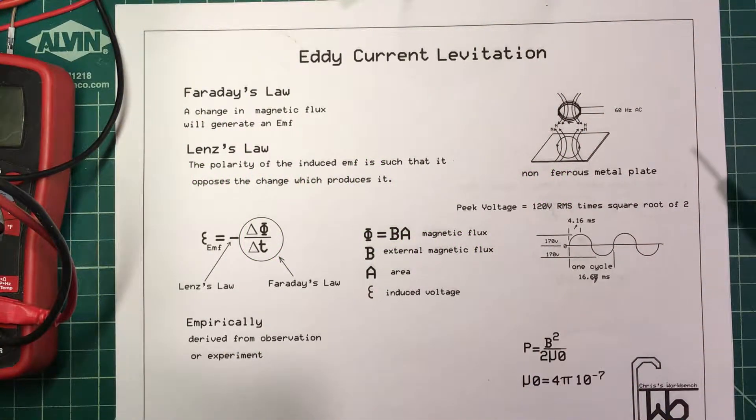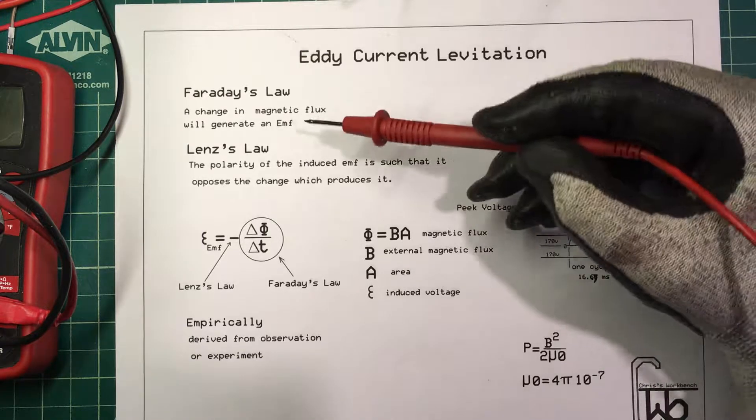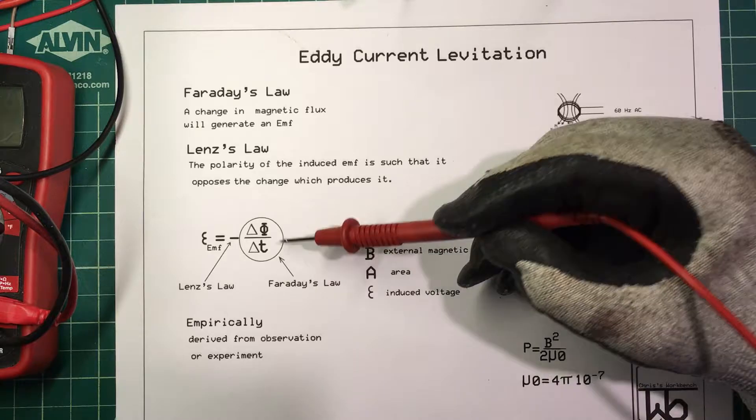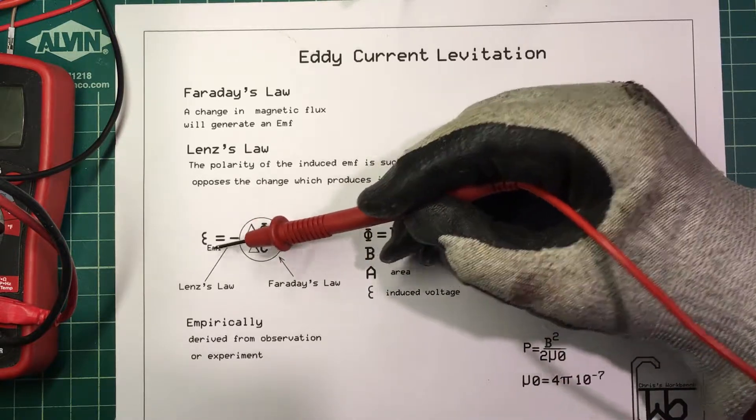Hi, we're going to try some eddy current levitation. We'll start with Faraday's law. He says that a change in magnetic flux will generate an EMF, and here's the formula down here. This epsilon E, this EMF...